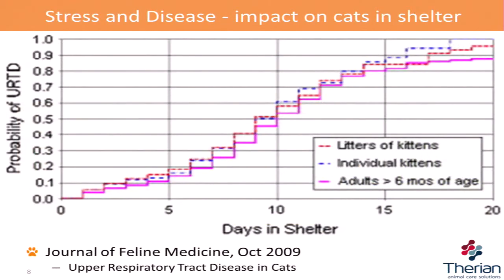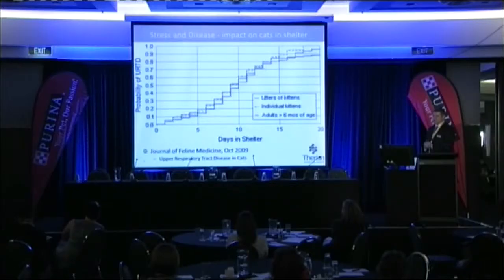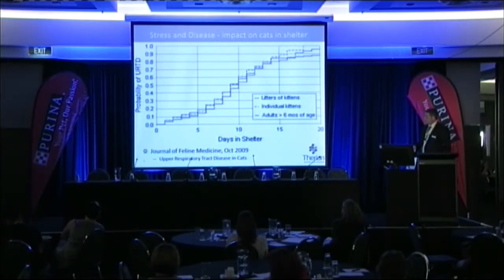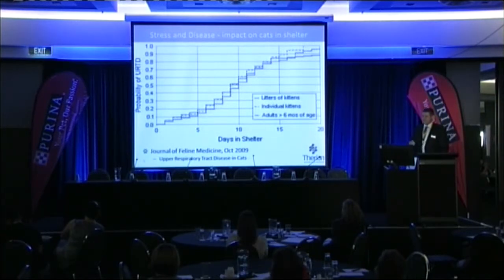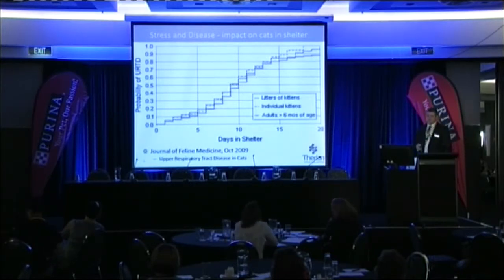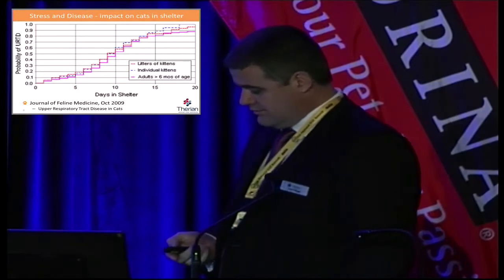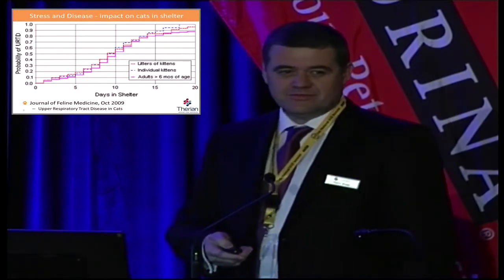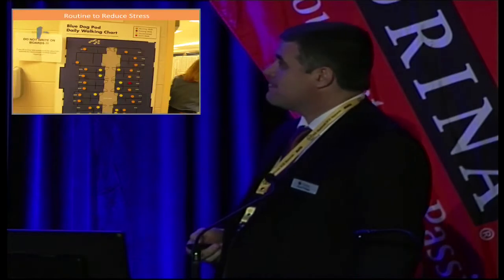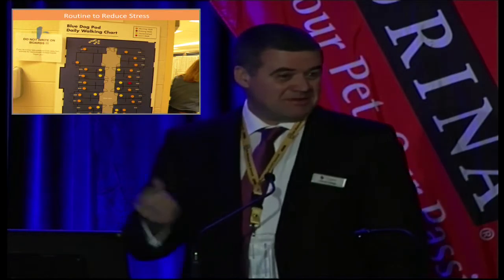An article produced in the Journal of Medicine in the US in 2009 looked at upper respiratory tract disease in cats during the length of stay in a shelter. As you can see, as time goes on, the numbers don't look good for cats. It's really important that we reduce the stress on dogs and cats in the shelter environment and move them in and out as quickly as we can.